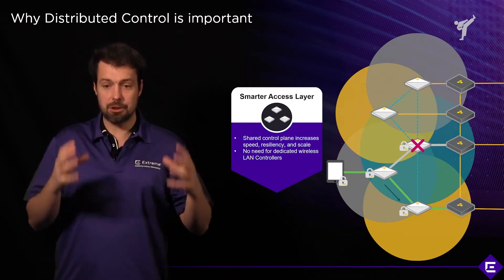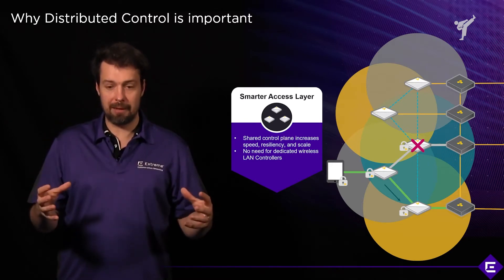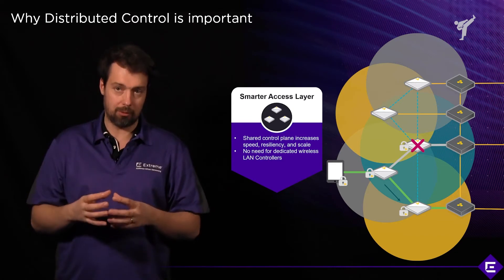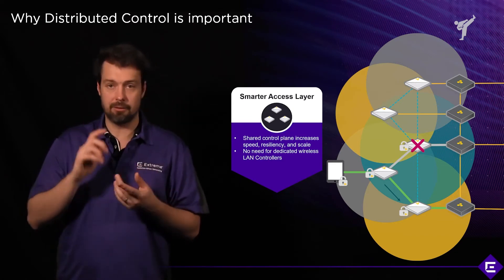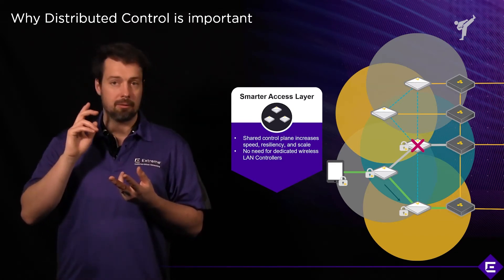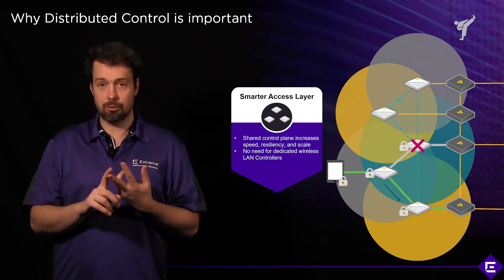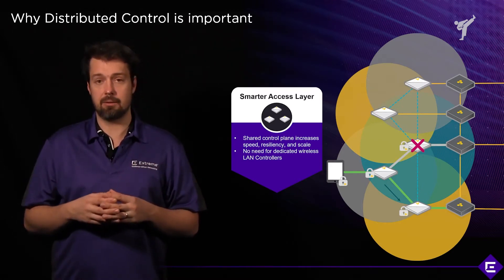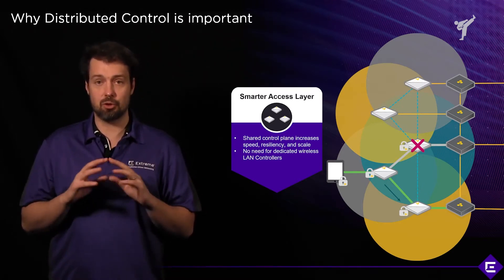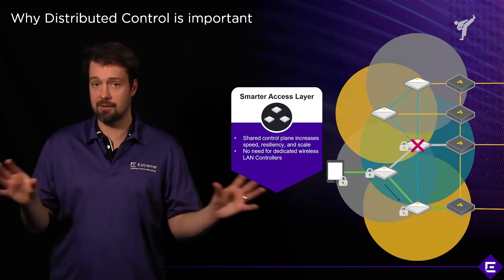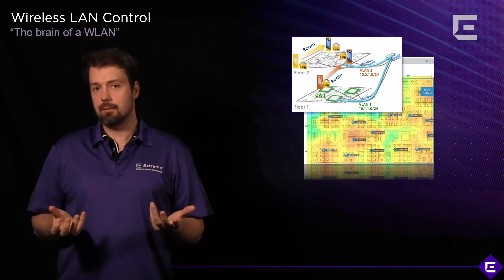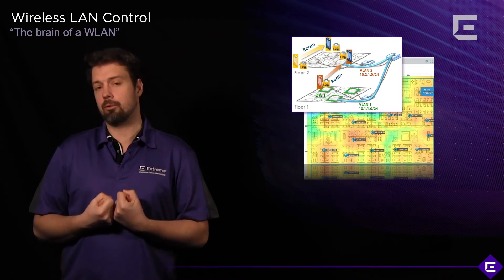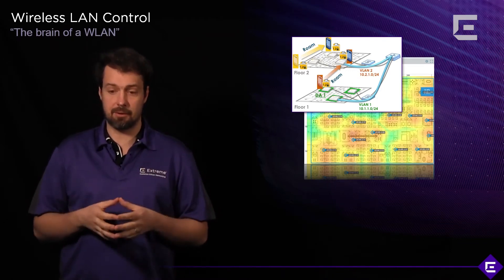With a distributed control plane, there is no need for dedicated wireless controllers — whether on the APs, running as virtual controllers on hypervisors, in the cloud, or as physical appliances in your data center. There's no need for central control. All you need is access points. Let's take a look at what the control plane does and how it does it.